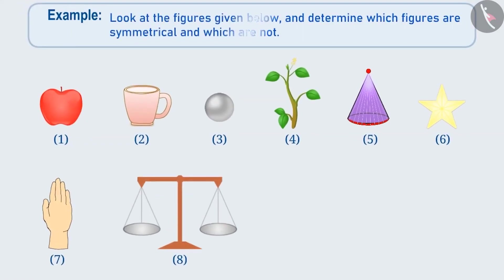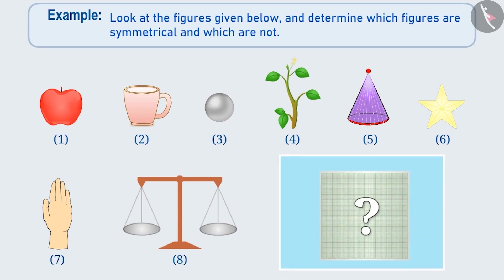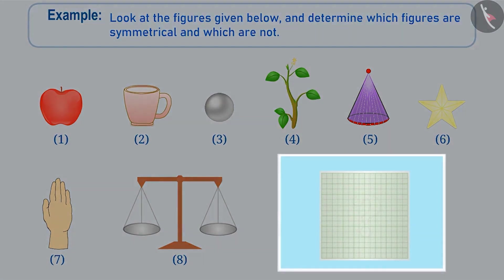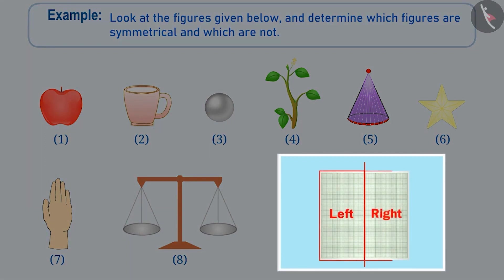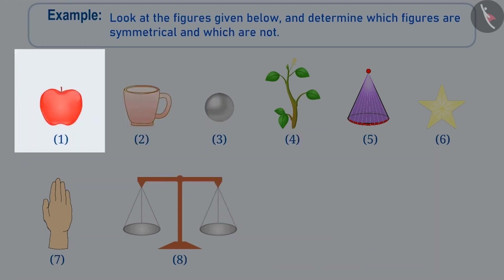Look at the figures given below and determine which figures are symmetrical and which are not. To determine if a figure is symmetrical or not, we check that on folding the figure from the middle, the half on the left and the half on the right are completely identical to each other or not — that is, whether both the parts are like reflections of each other.